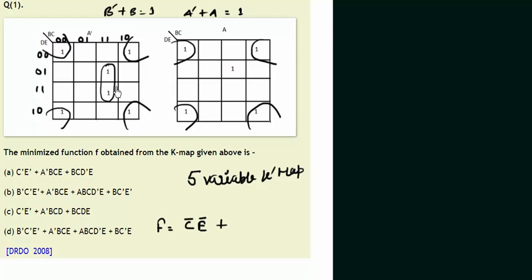So this is our second group in which A' will definitely come because the same pattern is not appearing in this map. So the A' plus A equals 1 case will not happen. We will write A', the D is changing from 0 to 1, and E is 1, so I will write E and B'C.